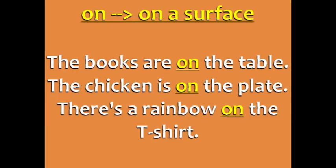Use 'on' when something is resting on a surface. For example, the books are on the table. The chicken is on the plate. There's a rainbow on the t-shirt.